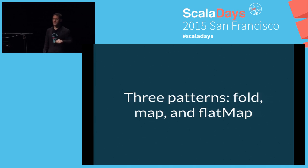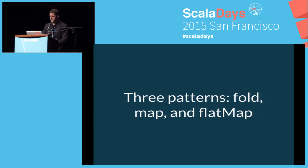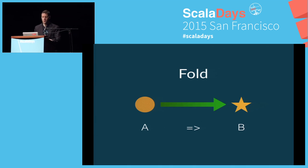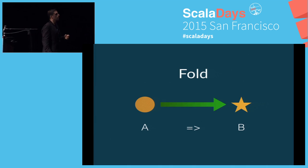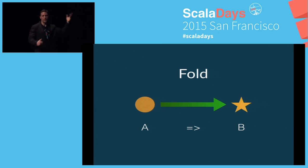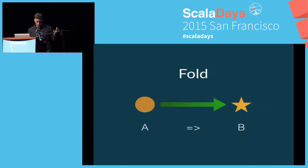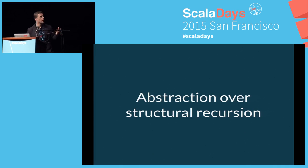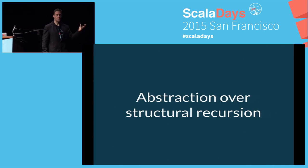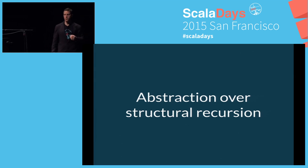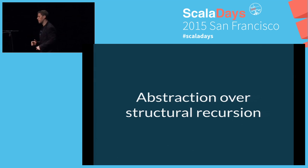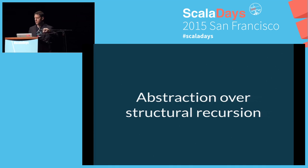Fold is very general. Given some type A, using fold I can convert to any type B. But there's a restriction: you can only really fold over things that are algebraic data types. Fold is an abstraction over structural recursion. If you've ever looked at fold left or fold right in the collections library, what's really going on is what I'm about to show you. To reiterate: fold is something you can do over an algebraic data type.